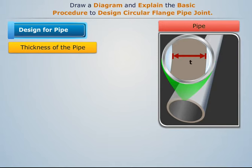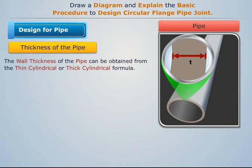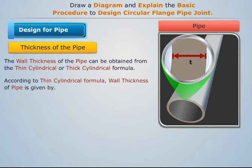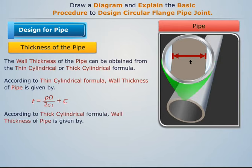Now let's determine the thickness of the pipe. The wall thickness of the pipe can be obtained from the thin cylindrical or thick cylindrical formula. According to the thin cylindrical formula, wall thickness of the pipe is given by a specific expression. According to the thick cylindrical formula, wall thickness of the pipe is given by another expression.